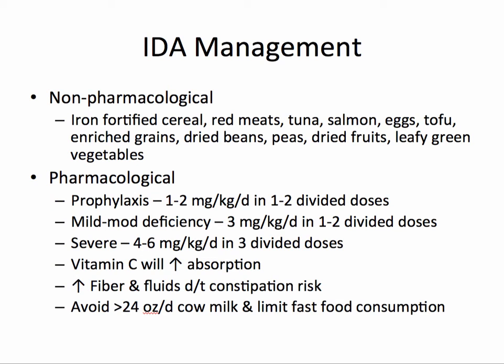The management of iron deficiency anemia is pretty straightforward — give the patient iron. There are a variety of non-pharmacological methods through food; however, patients may also receive iron tablets based on the severity of the disease. Taking vitamin C with iron will increase its absorption. Because iron increases the risk of constipation, encourage the patient to increase intake of fiber and fluids. Instruct the patient to avoid greater than 24 ounces a day of cow milk and limit fast food consumption, as these impair iron absorption.